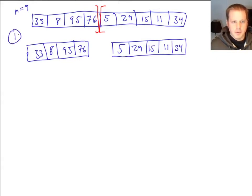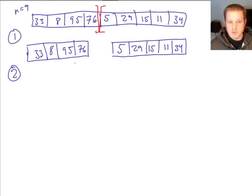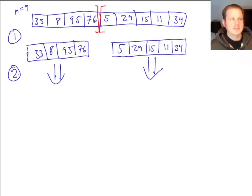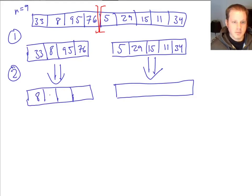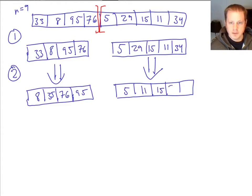The second step of any divide and conquer strategy is to use recursion. We have two smaller sorting problems now, and we're just going to assume that our algorithm already works to recursively sort those. One way of thinking about this: you can think of it as using a different sorting algorithm like selection sort. In reality we're just going to use merge sort itself for the recursive calls, but we don't want to overthink how that recursion works when we're figuring out the overall strategy. So we just say: I know there's some way to sort these smaller arrays, assume that happens. So the left becomes 8, 35, 76, 95 and the right becomes 5, 11, 15, 29, 34.